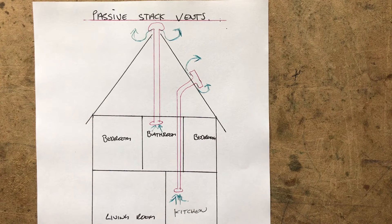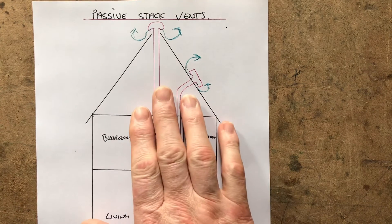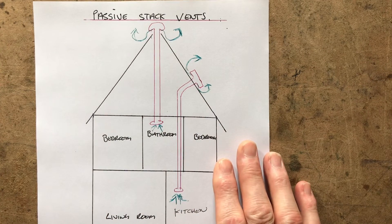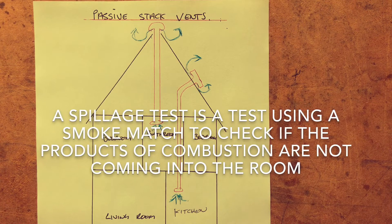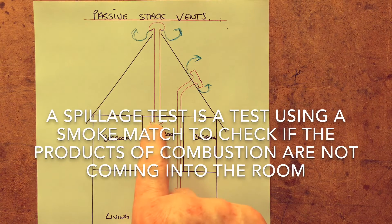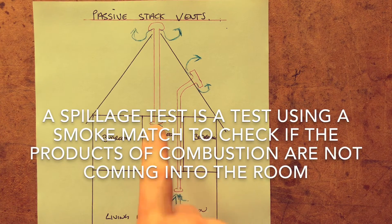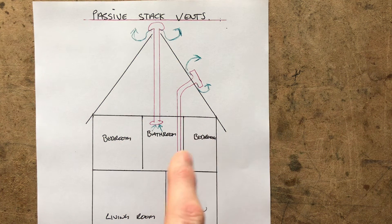For the purpose of calculating ventilation for a gas appliance, any passive stack ventilation systems should be ignored and not considered — this is what many engineers don't realise. We look at the appliance independently and calculate ventilation from the manufacturer's instructions and regulations. Where passive stacks do come in is when we're carrying out a spillage test on an open-flued appliance: we must always make sure these vents are open first, do the spillage test, then close the vents and test again.